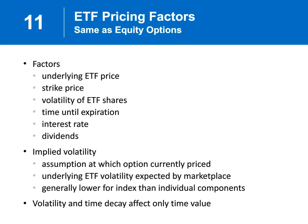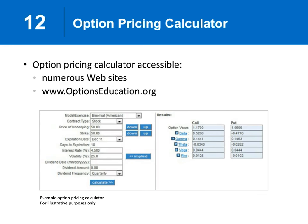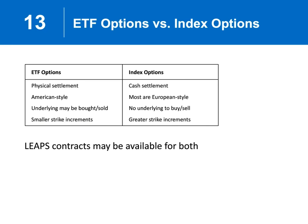Volatility and time decay affect just the time value portion of the option premium. Another important tool at optionseducation.org is the pricing calculator. Spending 10, 15, 30 minutes — plug in your favorite ETF, the strike price, days to expiration, change the volatility — and you'll see the different prices come up. You can put in the current price and then put in a price based on your forecast, to see how those put and call prices change.